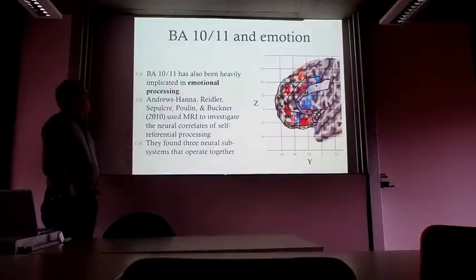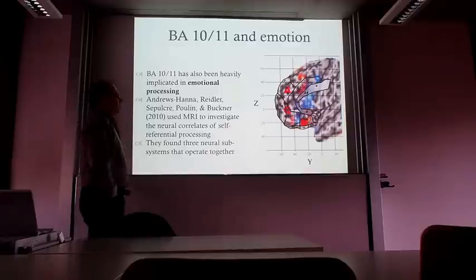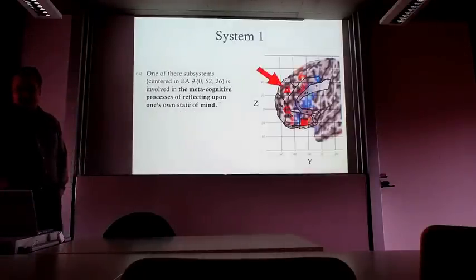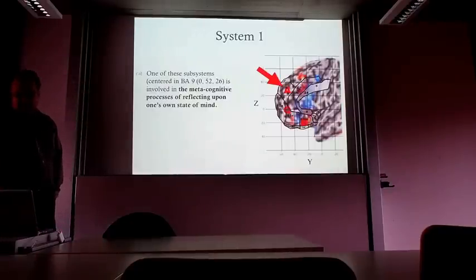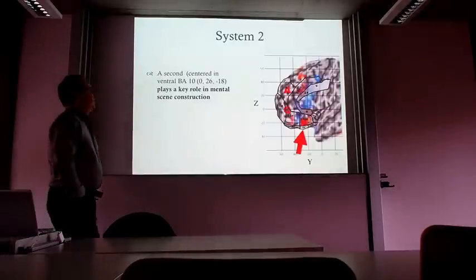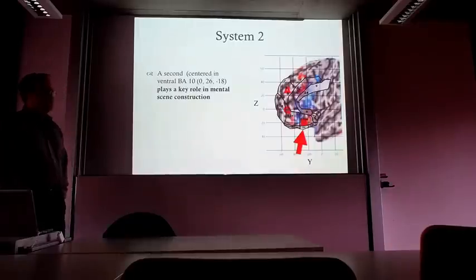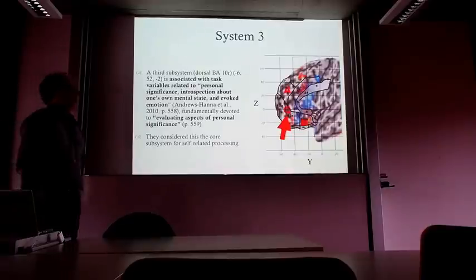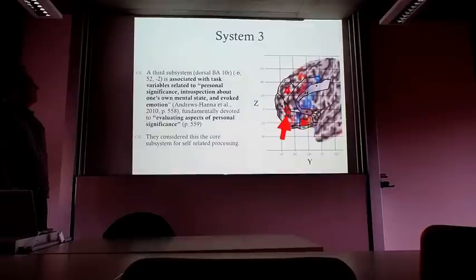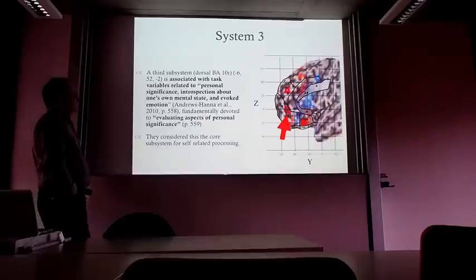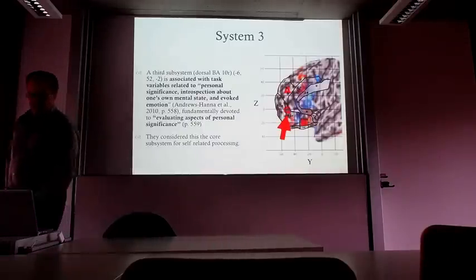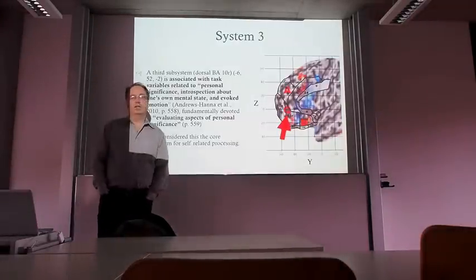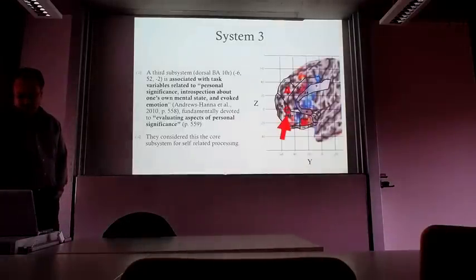In a review done a few years ago on the neural correlates of self-referential processing, they identified three main implicated areas. One is high up in Brodmann's area 9—prefrontal cortex associated with self-reflection on one's own state of mind. The second area, in Brodmann's area 10, plays a role in mental scene construction. The third and most interesting area was associated with task variables related to personal significance, introspection about one's own mental state, emotion, and evaluating aspects of personal significance—considered the core system for self-related and emotional processing about one's current state.